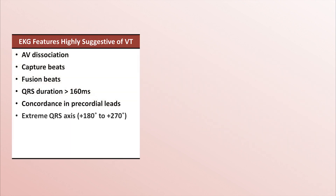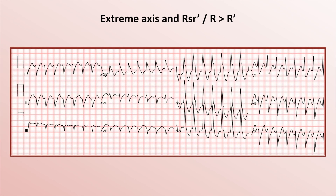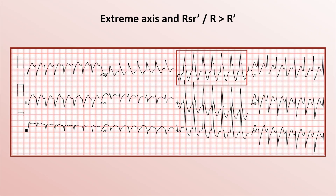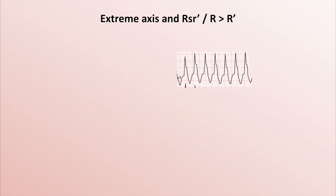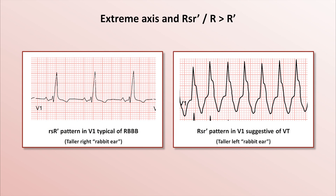Two more features are an extreme QRS axis, also known as a right superior axis, between positive 180 and positive 270 degrees, as well as a finding sometimes described as R greater than R' in V1, or more colloquially, a taller left so-called rabbit ear. The extreme axis is demonstrated by negative or down-going QRS complexes in both lead I and AVF. Regarding the rabbit ear, look at V1 and see how there is a left-sided peak to the R wave with a notch or shoulder on the right. While an RSR' complex or rabbit ears in V1 are a typical feature seen in right bundle branch block, in that case the right rabbit ear is taller. When the left rabbit ear is taller, it's suggestive of VT.